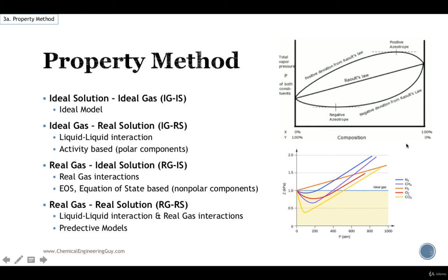Before actually covering what property methods we need to select, we need to understand what's the ideal model and the real model. An ideal model essentially assumes either ideal solution or ideal gas. That will be the best case scenario. The second case scenario will be ideal gas but real solution. The second case will be a real gas but we can treat it as ideal solution. And the worst case scenario will be real gas with real solution. So once again, let's cover each one of them.